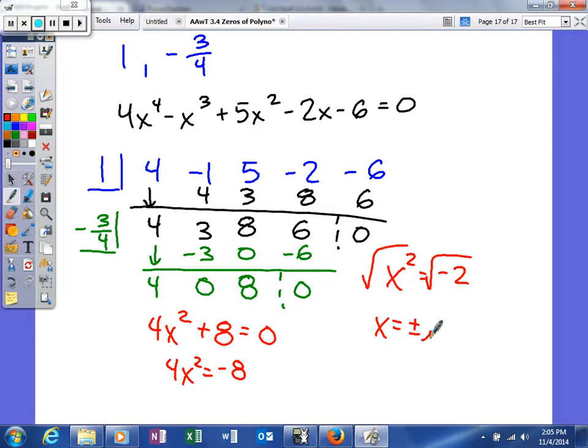And it should make a little sense because, like we said in Descartes' rule of signs, the other two would have to be imaginary. It doesn't cross the x-axis any other times. So your other two zeros are plus or minus i square root of 2. So there's your last example. Thanks.